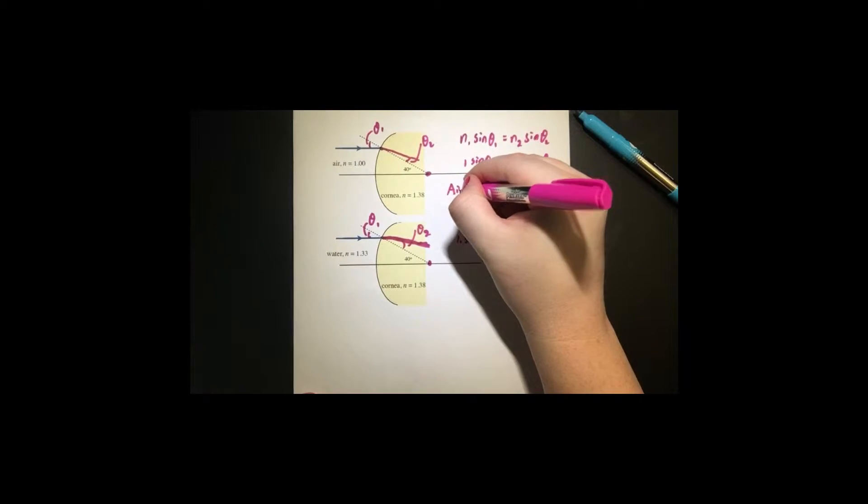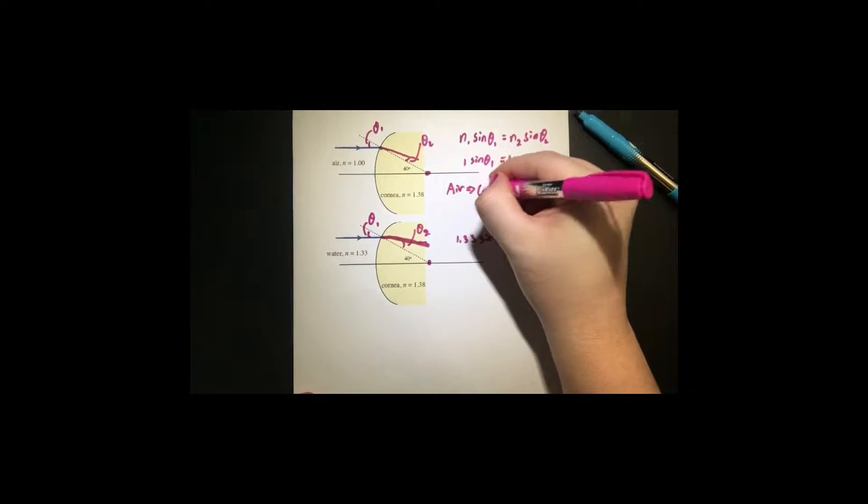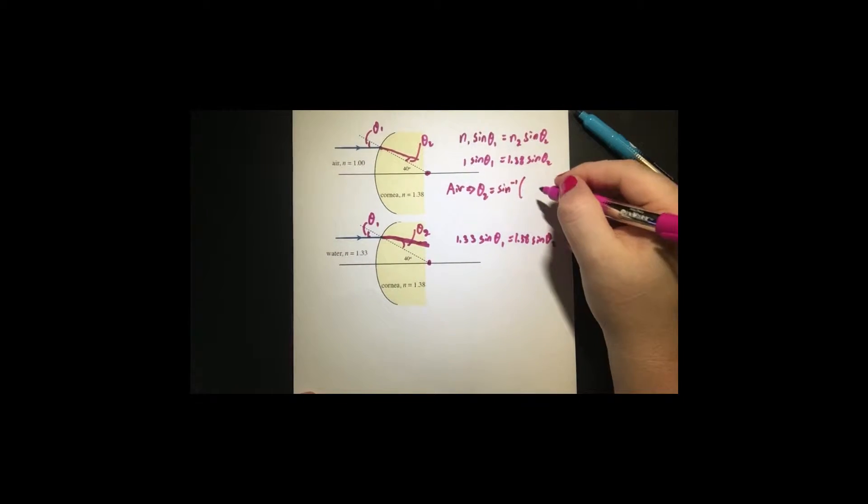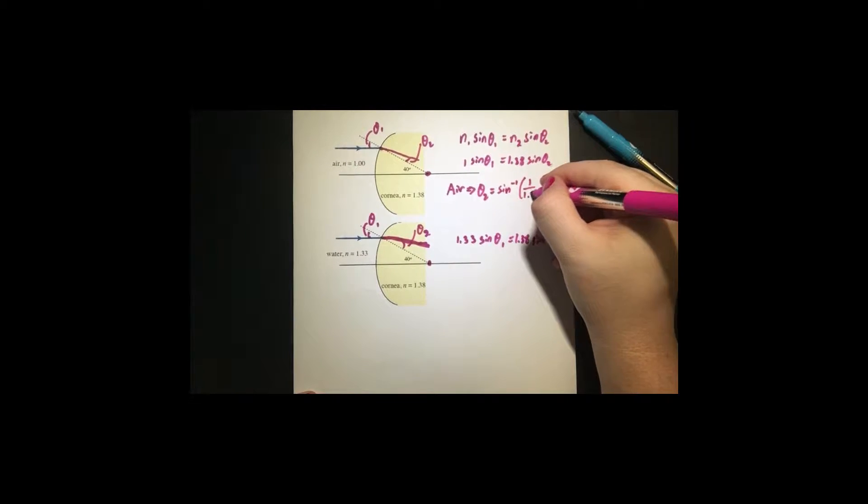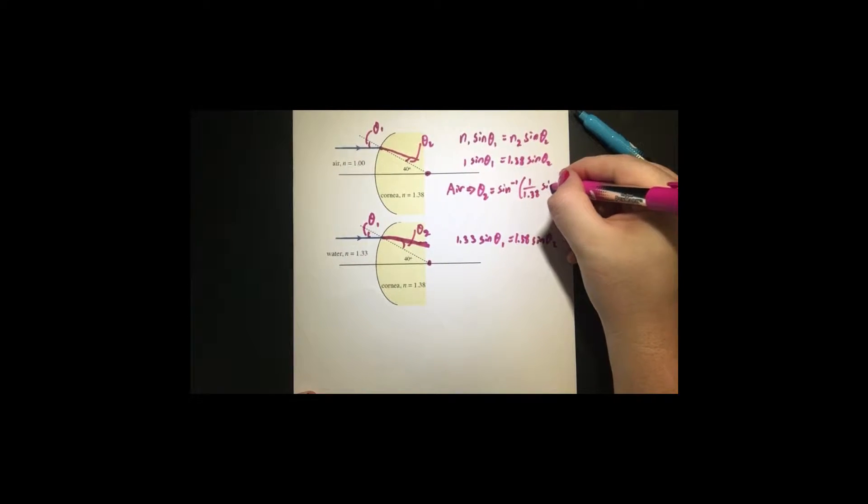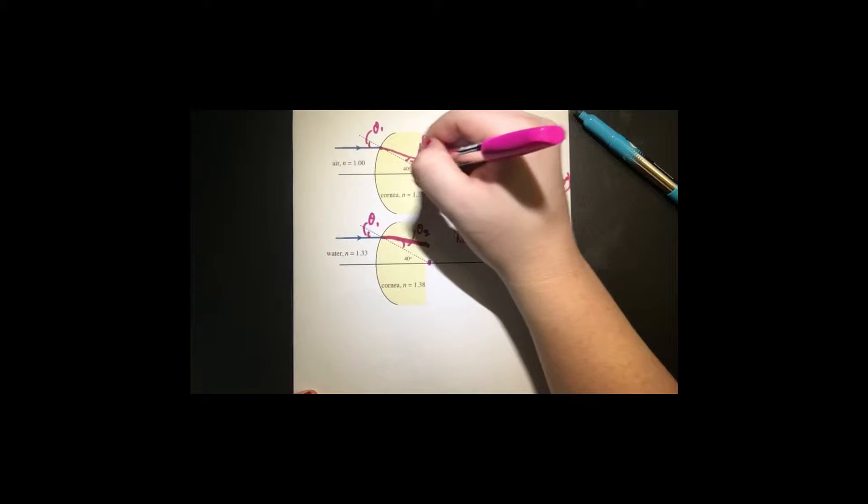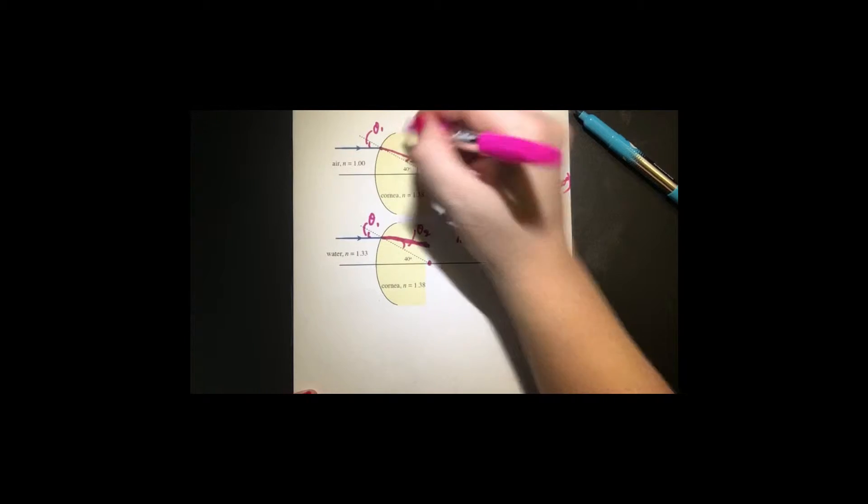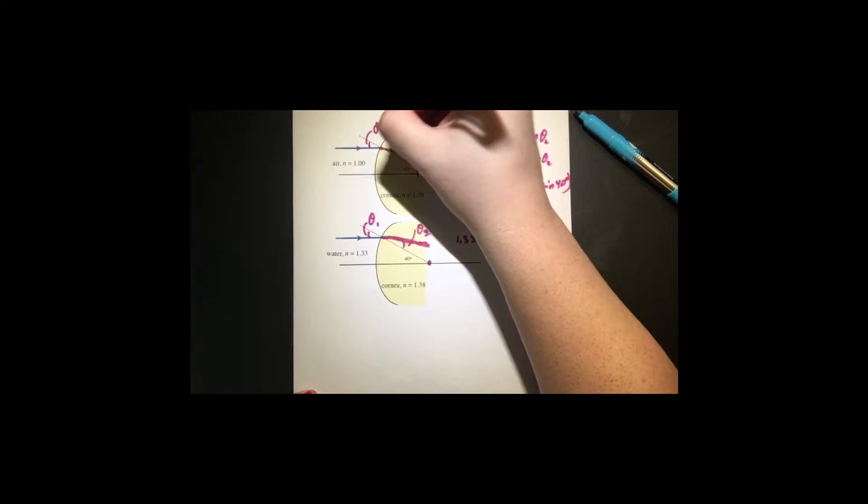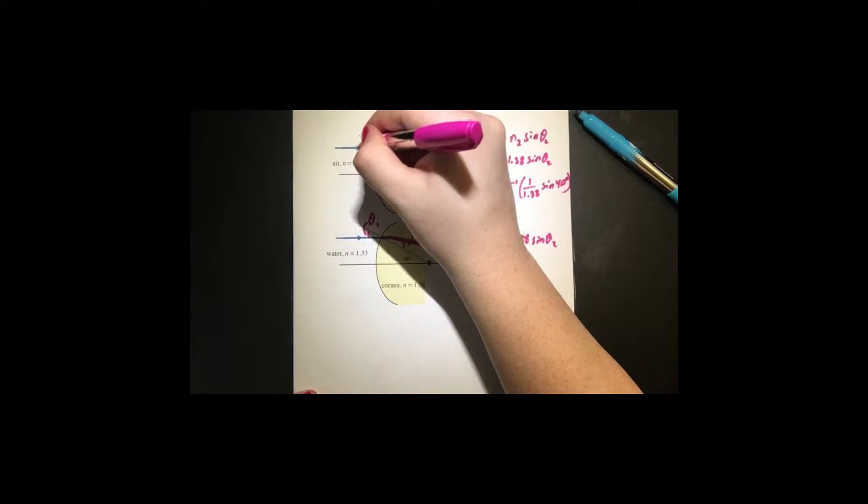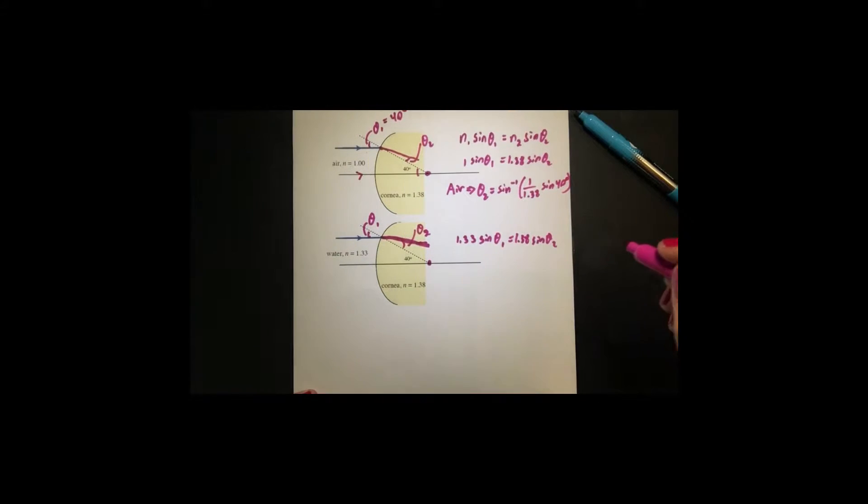So if we work out the math for both cases, here's air. What I get is theta 2 equals the inverse sine of 1 divided by 1.38 sine of 40. So theta 1 is 40 degrees, because our angle here is 40 degrees. So they're similar triangles. If this is 40 degrees, it's just like moving the triangle up here, theta 1 is 40 degrees. So it's just like taking this triangle and moving it here, because these two lines are parallel to each other.